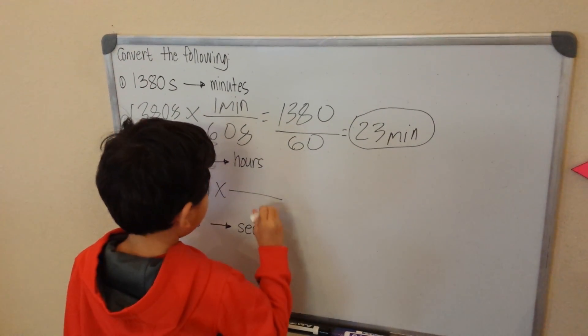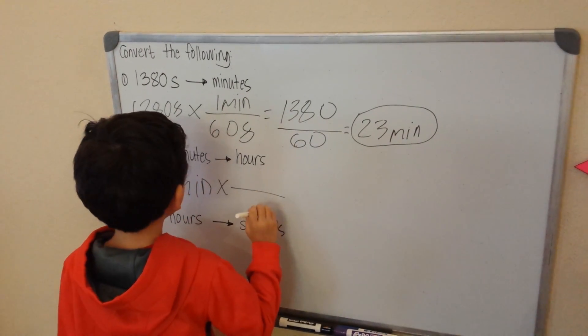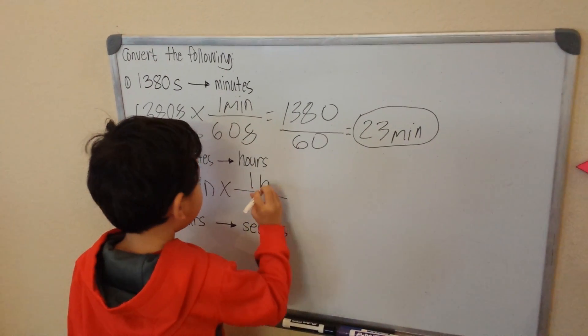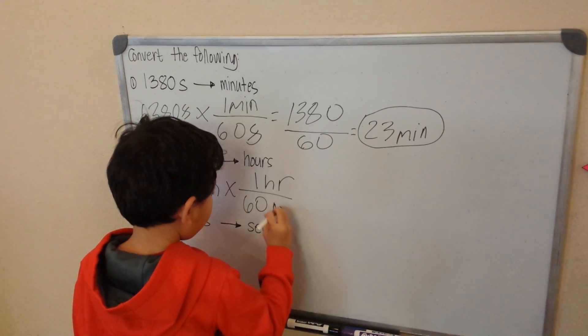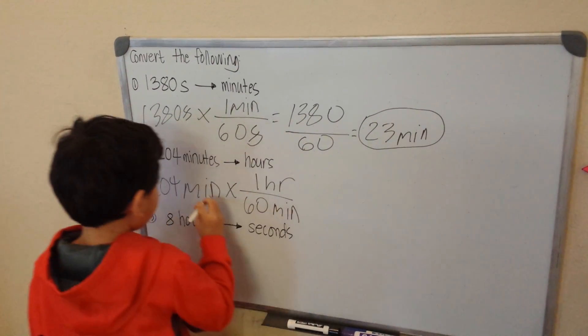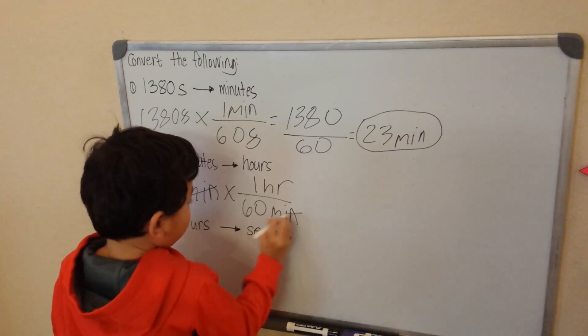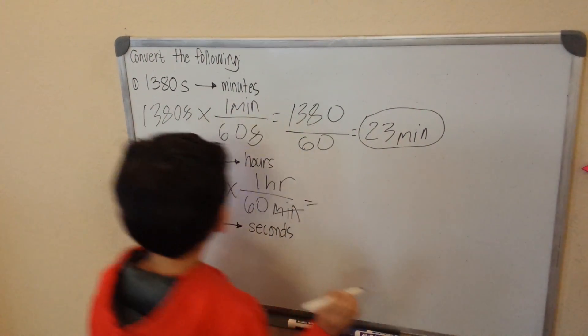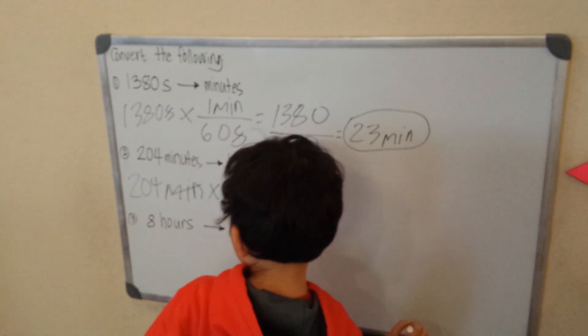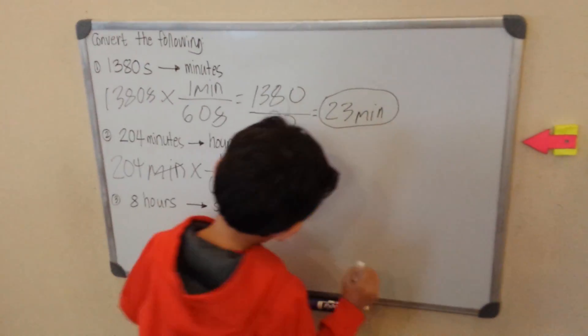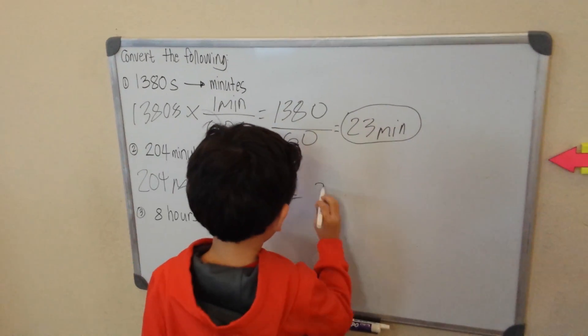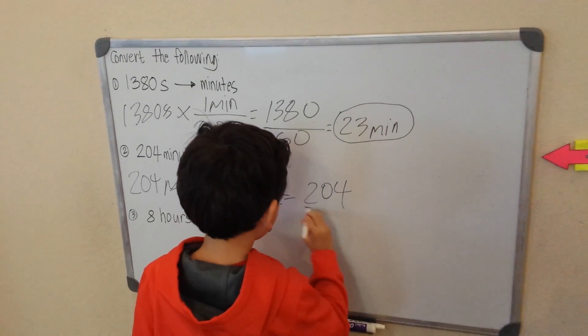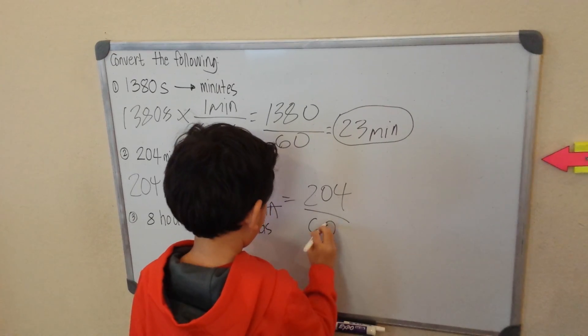Minutes at the bottom here and hours at the top. One hour is 60 minutes. We can also divide this, and then this one will be just equal. 204 divided by 60.